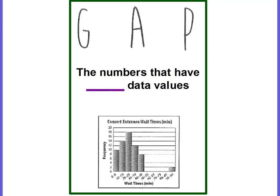Then we have gaps. Gaps are the numbers that have no data values. Looking at this histogram, you can see that the 50 to 59, 60 to 69, 70 to 79, and the 80 to 89 range have no bar here. That means there is no data for those numbers. This is what we call a gap — there is a gap from 50 to 89.